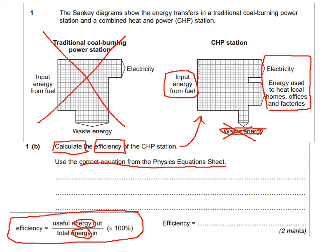Counting the squares gives a relative value for the useful energy in — that looks like 20 squares — so that goes on the bottom. Then I count the squares for both useful outputs, since they're both useful forms of energy, and put that on top. Then multiply by 100. You must give your answer as a percentage, as the formula says times 100. If you wrote joules, that wouldn't be a measure of efficiency and you'd lose the mark even with the right number.